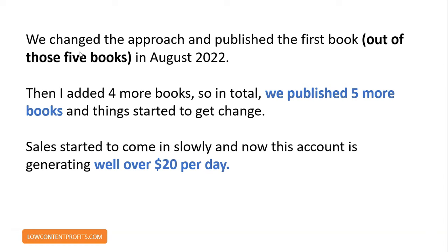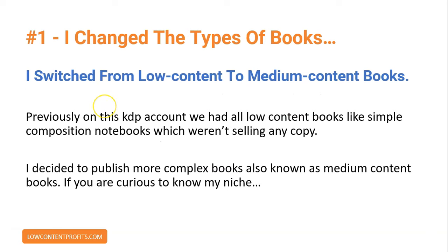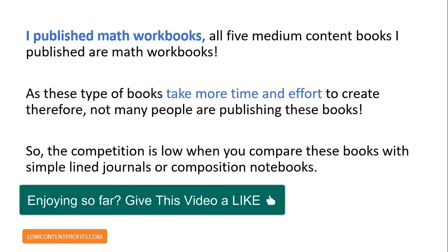Sales started to come in slowly, and now this account is generating well over $20 per day. Strategy number one: I changed the type of books. I switched from low content to medium content books. Previously on this account, we had all low content books like simple composition notebooks which weren't selling any copies. I decided to publish more complex books, also known as medium content books. If you are curious to know my niche, I published math workbooks.